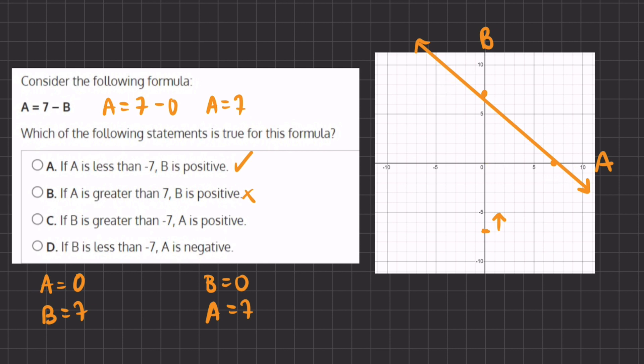All right, so C is incorrect. And now let's read what D says. If B is less than negative 7, down here, then A is negative, which is also incorrect, because we have, in this region, we have A to be positive when B is less than negative 7. So A can also be in the positive realm. Therefore, D is incorrect, and A will be our final answer.